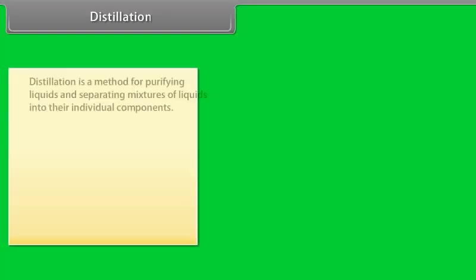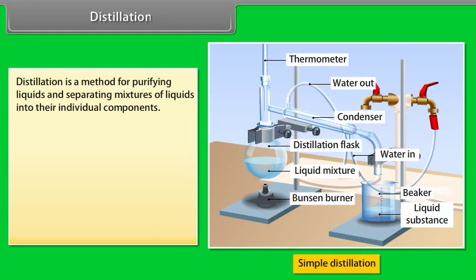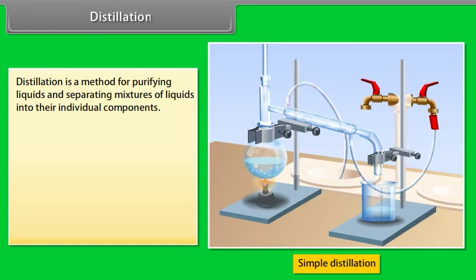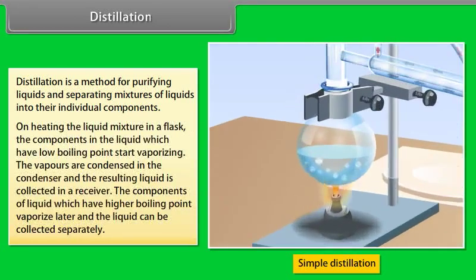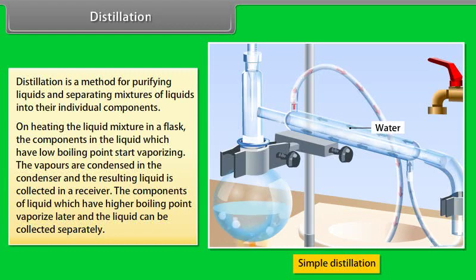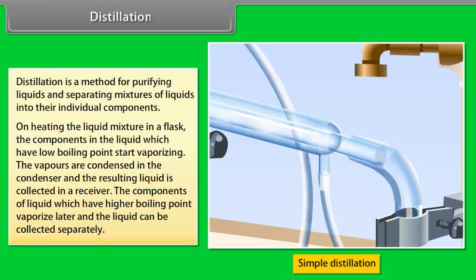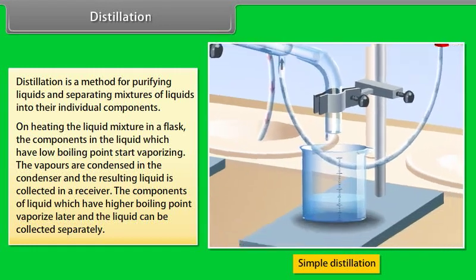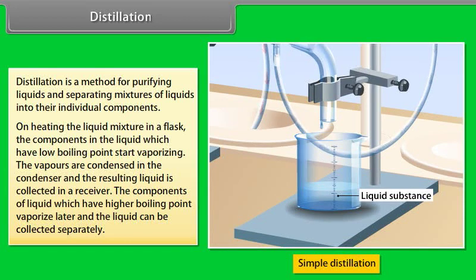Distillation: Distillation is a method for purifying liquids and separating mixtures of liquids into their individual components. On heating the liquid mixture in a flask, the components with low boiling point start vaporizing. The vapors are condensed in the condenser and the resulting liquid is collected in a receiver. Components with higher boiling point vaporize later and can be collected separately.